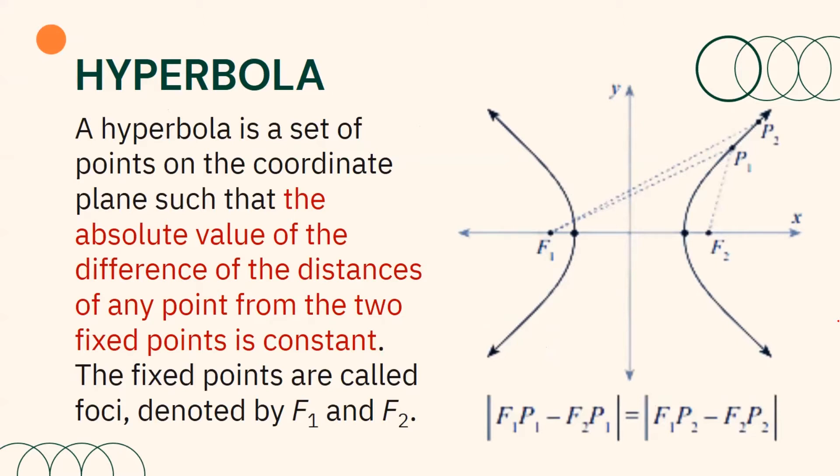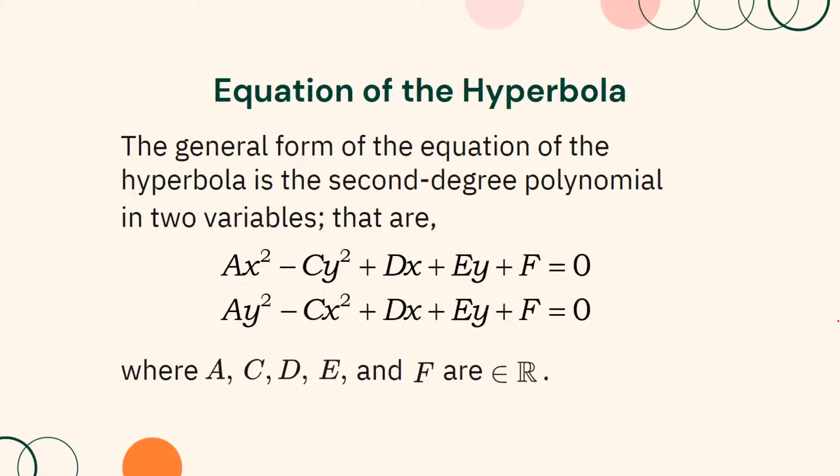The fixed points are called foci, denoted by F₁ and F₂. We have also discussed that the general form of the equations of a hyperbola is a second-degree polynomial in two variables: ax² − cy² + dx + ey + f = 0 and ay² − cx² + dx + ey + f = 0, where a, c, d, e, and f are elements of real numbers.